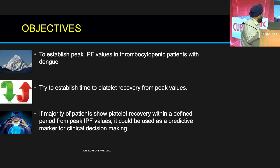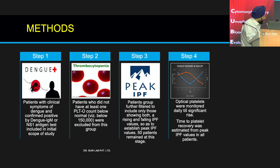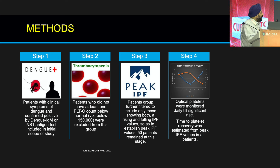The objectives were simple: we were trying to establish IPF as a prognostic marker and determine within what defined period from peak IPF platelet recovery happens. We used a simple four-step methodology — first, NS1 antigen or IgM positive dengue patients; then reduced to only thrombocytopenic patients; then took patients who had both rising and falling titers so we could establish peak IPF for each patient; and finally, platelet counts and time to platelet recovery were monitored on a daily basis.